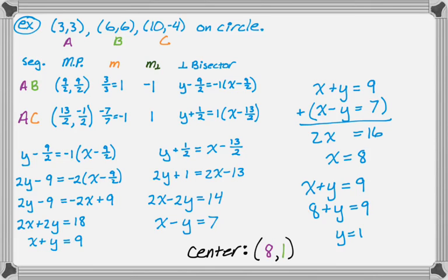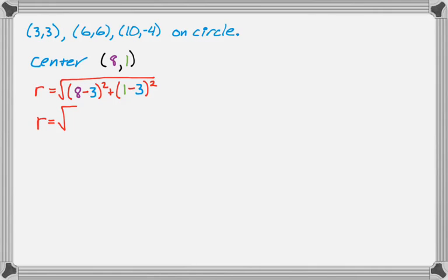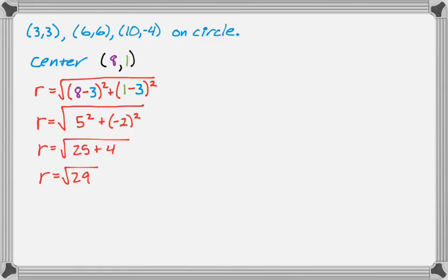Now I just need to figure out the radius. I know three points on the circle and the center, so the distance from any of those three points to the center is the radius. Using point A(3,3): the radius equals the square root of the quantity 8 minus 3 squared plus the quantity 1 minus 3 squared, which is the square root of 5 squared plus negative 2 squared — the square root of 25 plus 4 — which is the square root of 29.